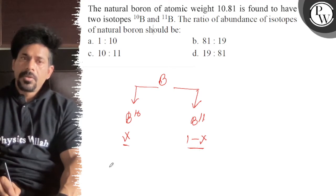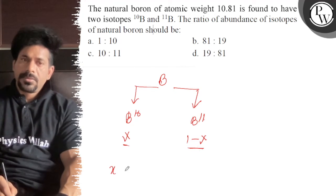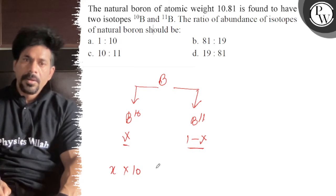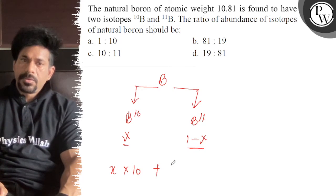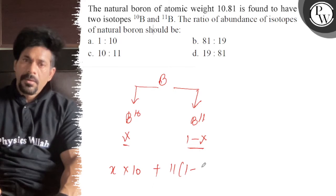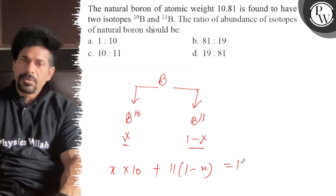So we can write x times 10 plus 11 times 1 minus x. That should be equal to 10.81.